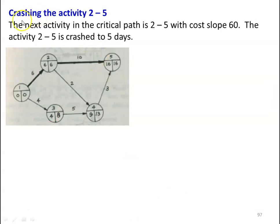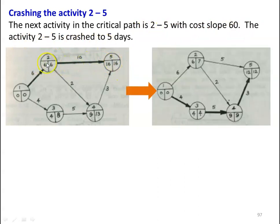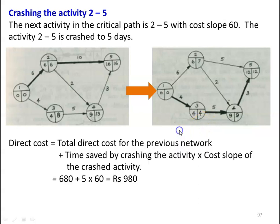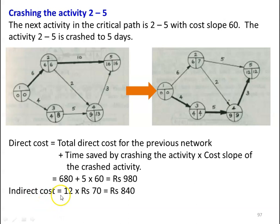Next, we crash activity 2-5, which has a cost slope of 60. Activity 2-5 is crashed from 10 days to 5 days. Recalculating TE and TL values, the critical path changes to 1-3, 3-4, and 3-4-5. The project duration reduces to 12 days. Direct cost = ₹680 + (5 × ₹60) = ₹980. Indirect cost = 12 × ₹70 = ₹840. Total cost = ₹980 + ₹840 = ₹1,820.